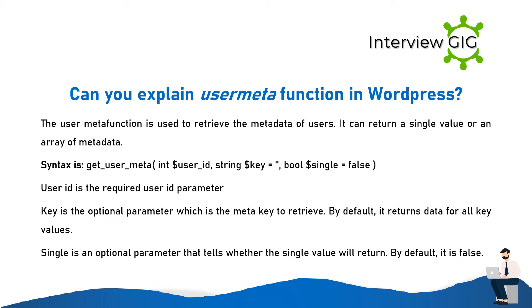Can you explain the user meta function in WordPress? The user meta function is used to retrieve the metadata of users. It can return a single value or an array of metadata. Syntax: get_user_meta(int $user_id, string $key = '', bool $single = false). User ID is the required parameter. Key is optional — the meta key to retrieve; by default it returns data for all keys. Single is an optional parameter indicating whether to return a single value; by default it is false.